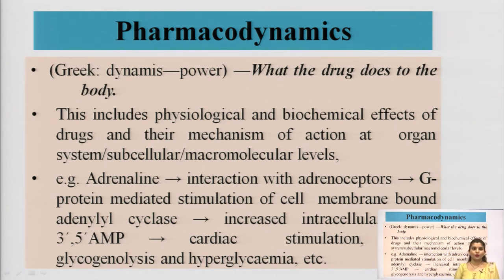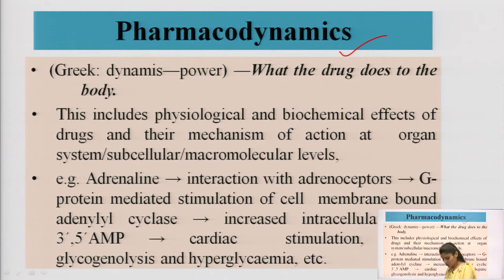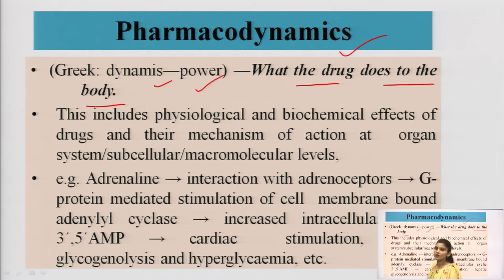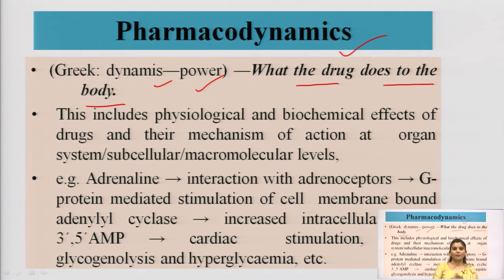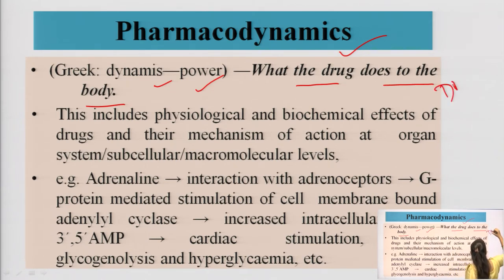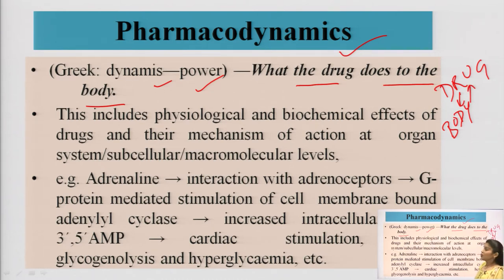Pharmacology is broadly divided into two main branches. The first branch is pharmacodynamics. In pharmacodynamics, we learn about what the drug does to the body — the word 'dynamics' means power. There is a bi-phasic relationship between drug and body, just like a relationship between two friends. When we study the effect of the drug on the body — pharmacodynamics — we learn what happens when a medicine is taken and what effect it shows on the body.